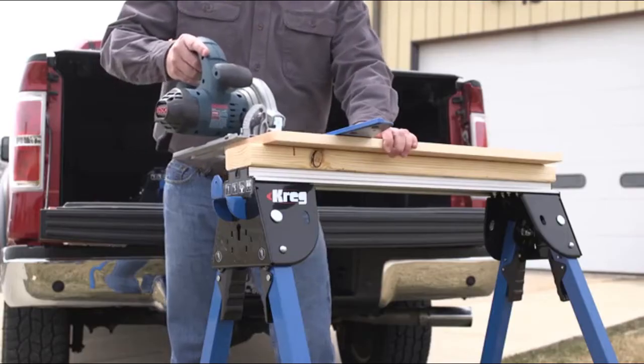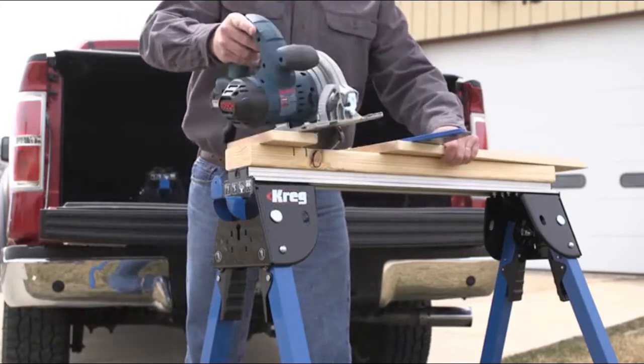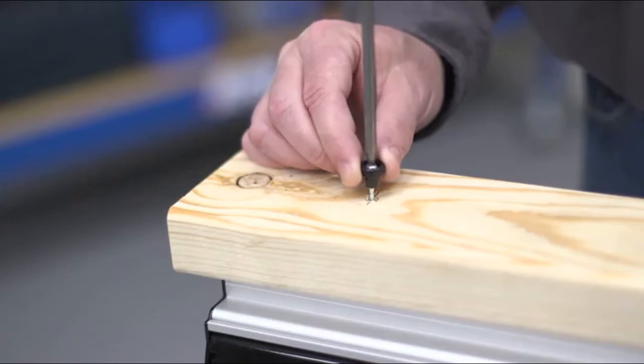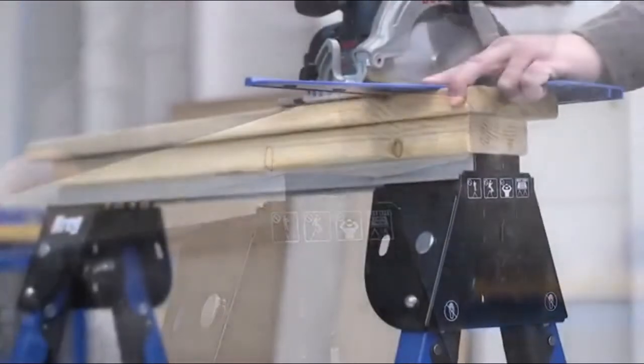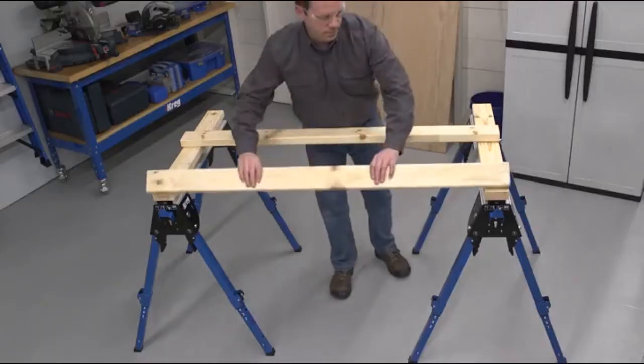In addition to holding the clamp, the track can also be used to mount a sacrificial cutting surface on top of the Trackhorse. Simply attach the included bushings to a 2x4 and then slide it into the track. Now you can cut without worrying about damaging the Trackhorse or your saw.